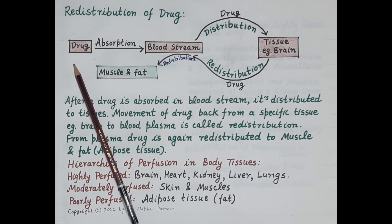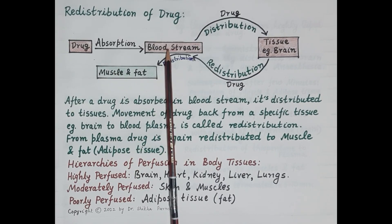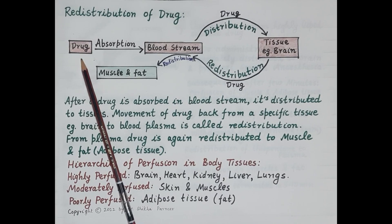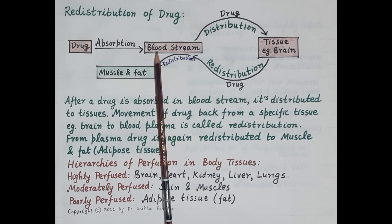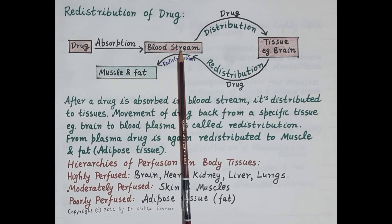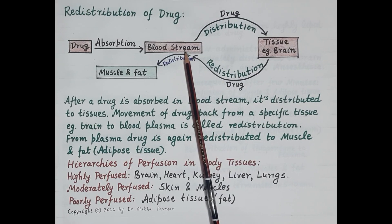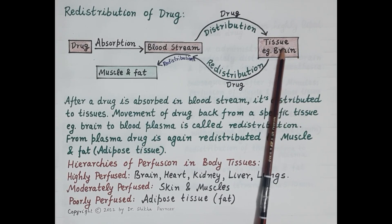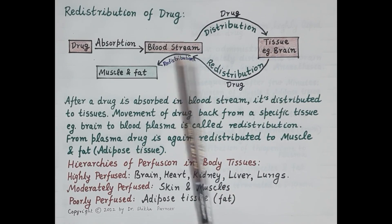Once a drug is administered in the body, it is absorbed into the bloodstream, and from there it is distributed to the body tissues. For example, the drug thiopentone sodium is injected IV, that is by the intravenous route, so it is directly injected into the bloodstream. From the bloodstream, thiopentone sodium is distributed to the brain. This movement from blood to the brain is termed distribution, while the movement of thiopentone sodium from the brain back to the blood is termed redistribution.